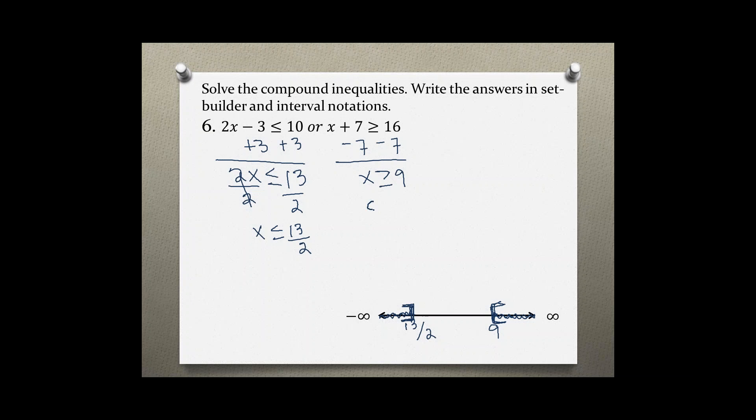So in set builder notation, all values of x such that x is less than or equal to 13 over 2, or x is greater than or equal to 9.